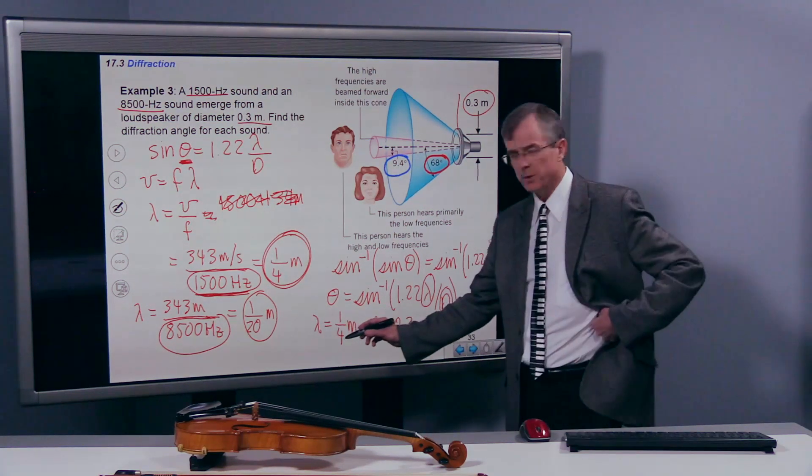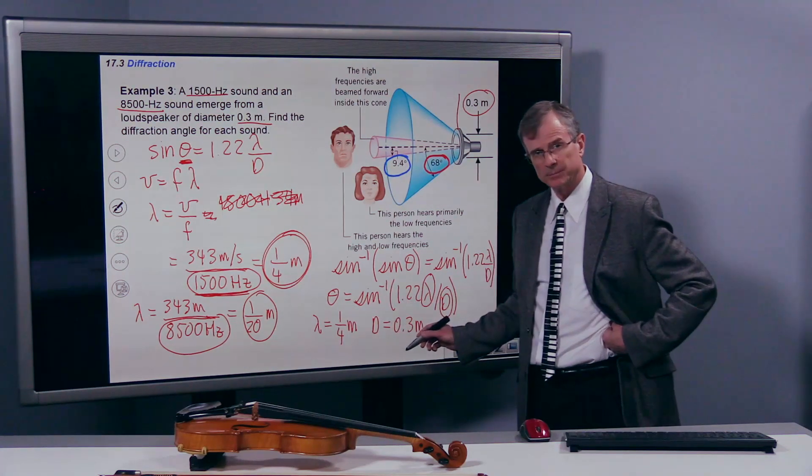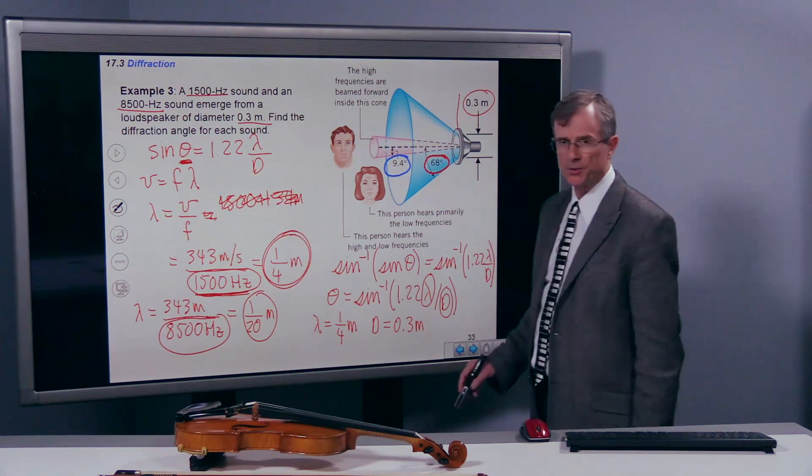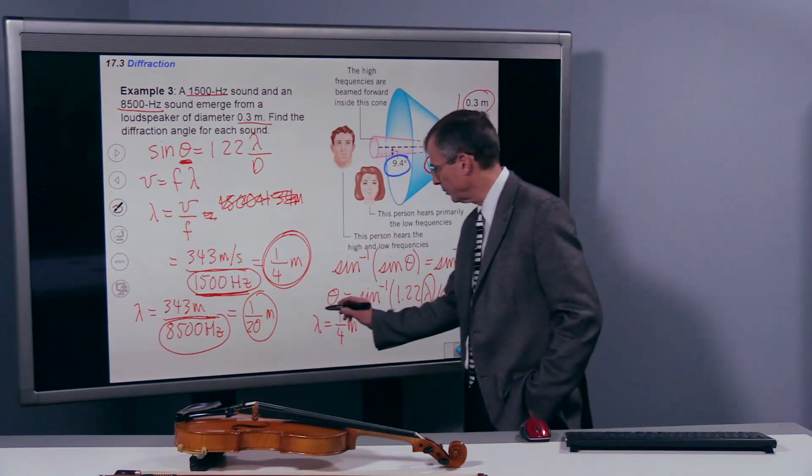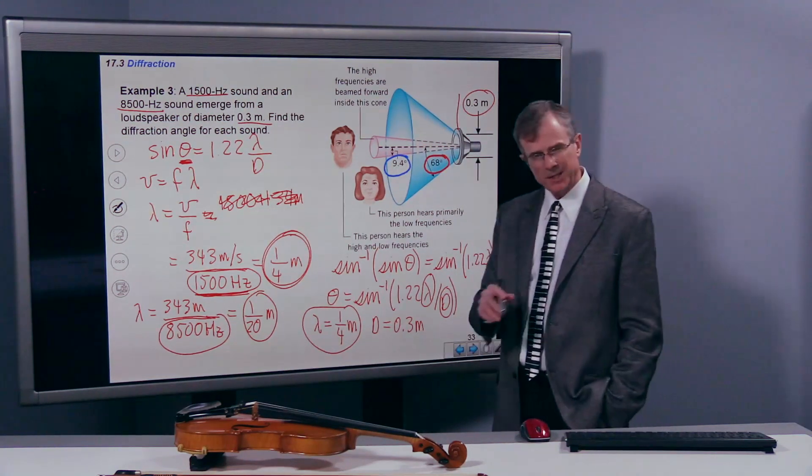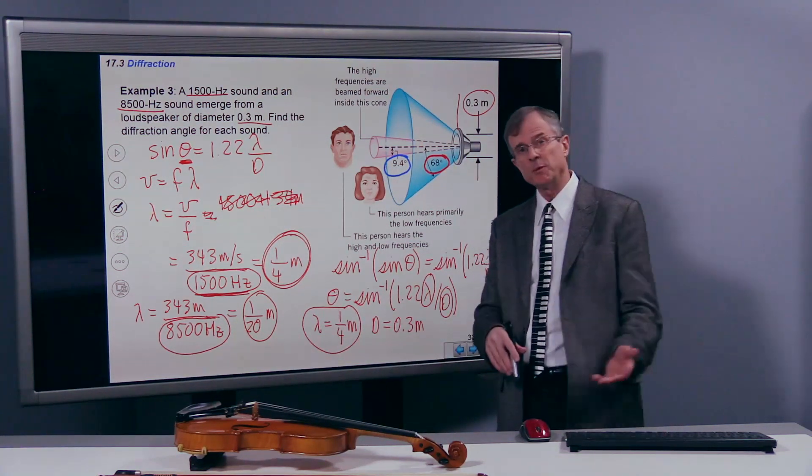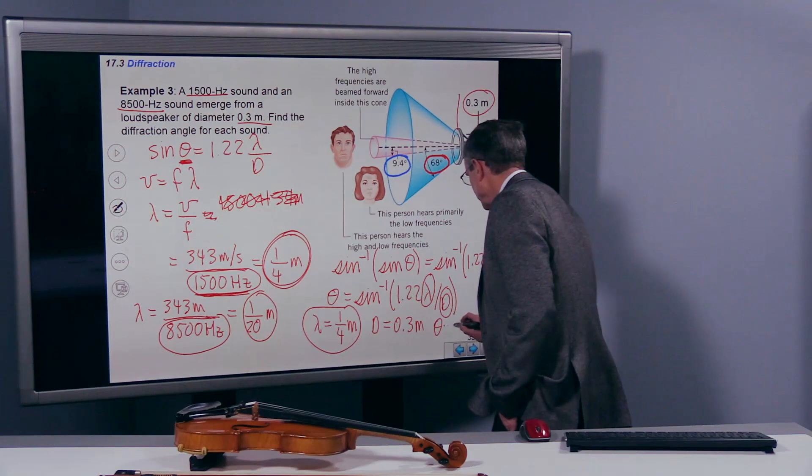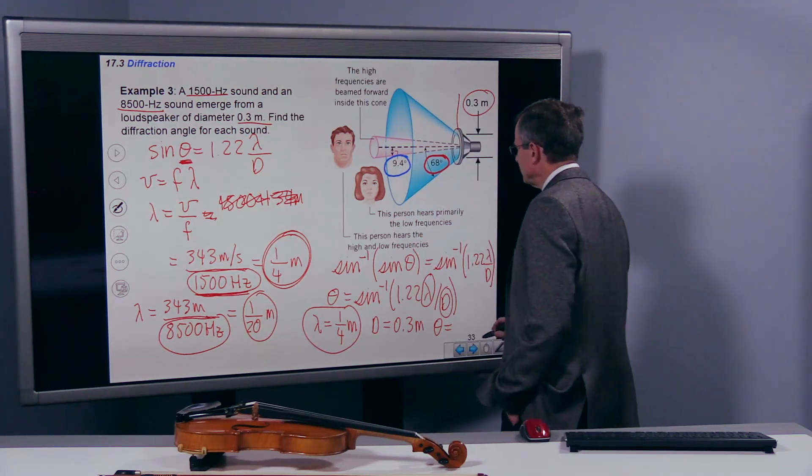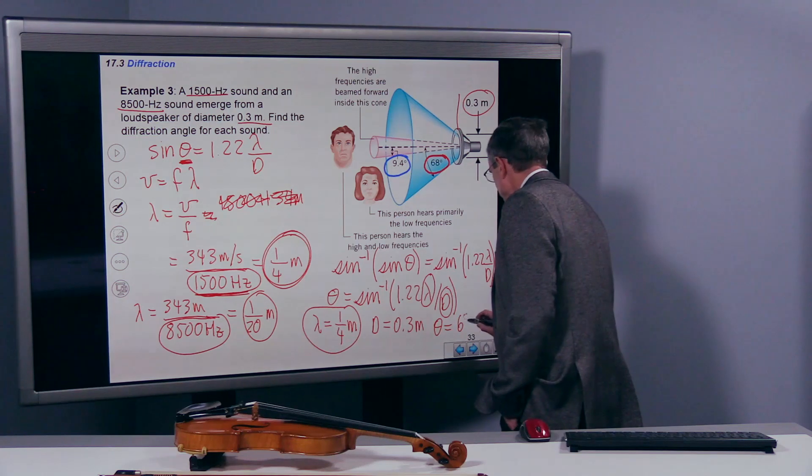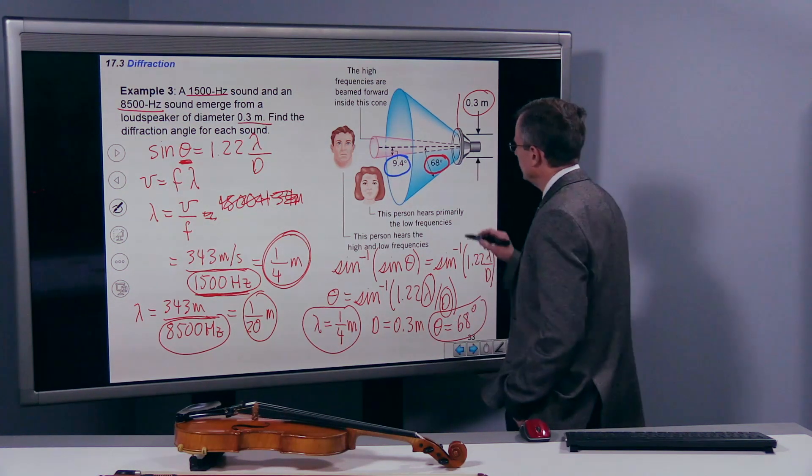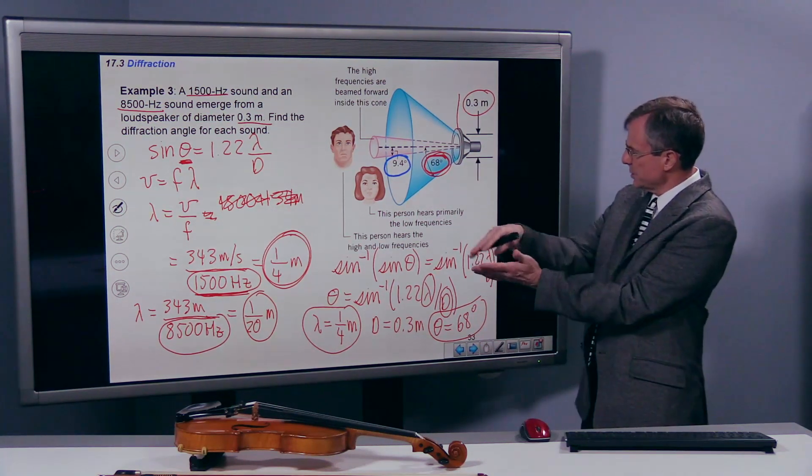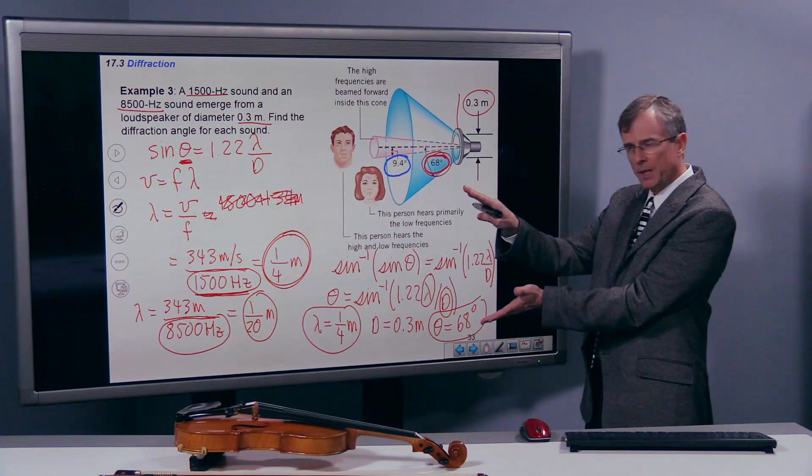And we should get a fairly big diffraction angle. Not as big as it would be if lambda were really a lot bigger than d. But that's kind of on the boundary line between lambda being a lot bigger than d or a lot smaller than d. And in fact, what you get, if you plug the numbers in, is 68 degrees. And that's shown here. 68 degrees. So that diffraction angle, so the sound spreads out. Most of the sound is captured within that cone.